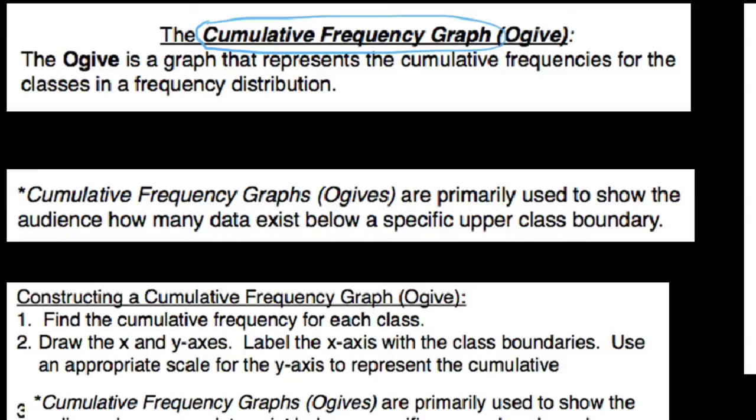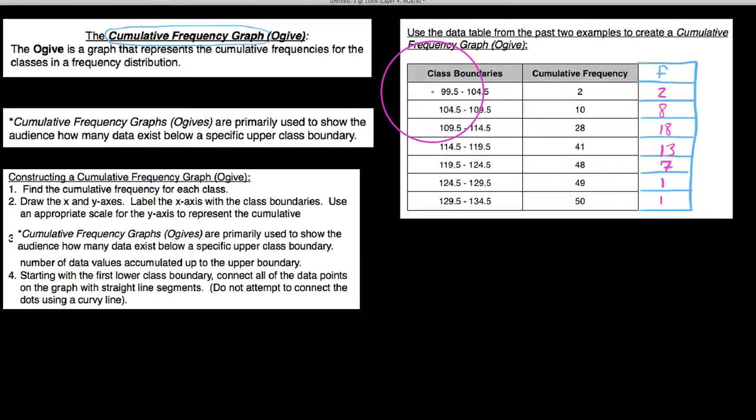When we say upper class boundary, we can take a look at this data on the right here. This is the same data I've used in my last two videos, but basically it was the high temperatures of all 50 states. If I look at cumulative frequency here, recall these are my frequencies right here. Cumulative frequency says how many have you counted up until now?